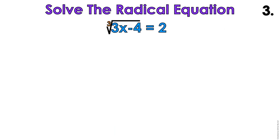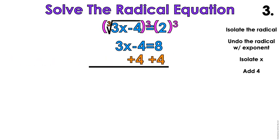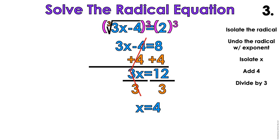Alright, so in this example, the radical is what? Isolated already. Oh my gosh, that makes my job easy. I don't have to isolate it. So let me just go ahead and do the inverse of this cube root. So that means I'm gonna cube both sides. So 3x minus 4 equals 8. We're gonna isolate the x. So we're gonna add 4 to both sides. And we're gonna cancel out that 4. We're going to divide both sides by 3. x equals 4. Make sure you check your answers.